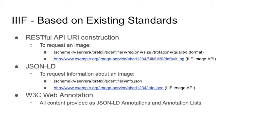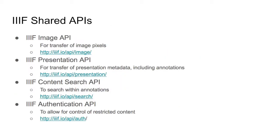Repositories can publish images once and reuse often, simply by changing HTTP request parameters for an image's size, a region of an image, rotation, quality, and format. IIIF is currently comprised of four specifications known as the IIIF Image API, the Presentation API, Content Search API, and Authentication API, all based on the IIIF design patterns.